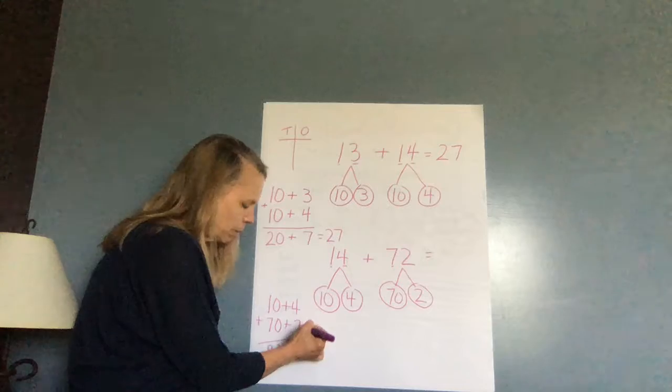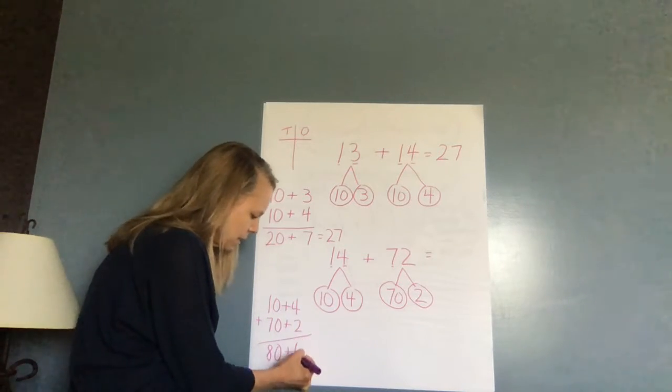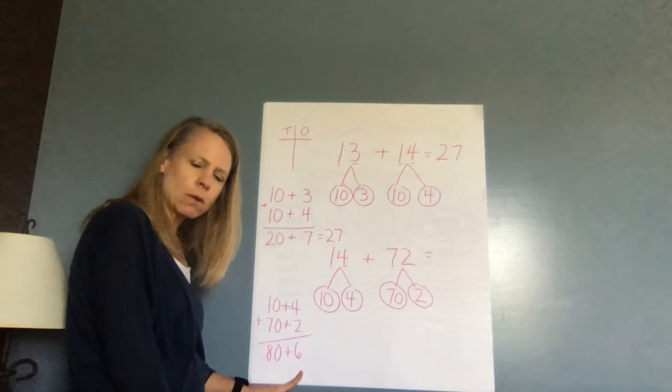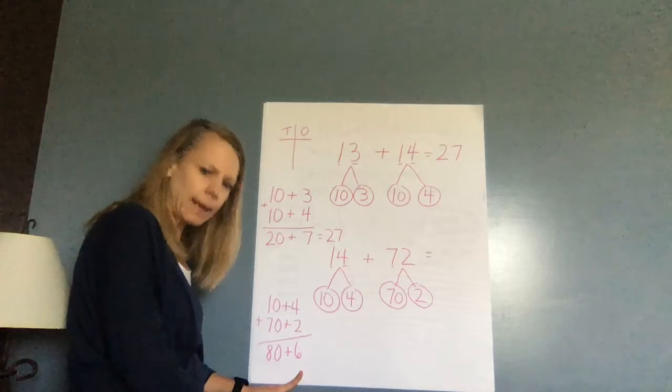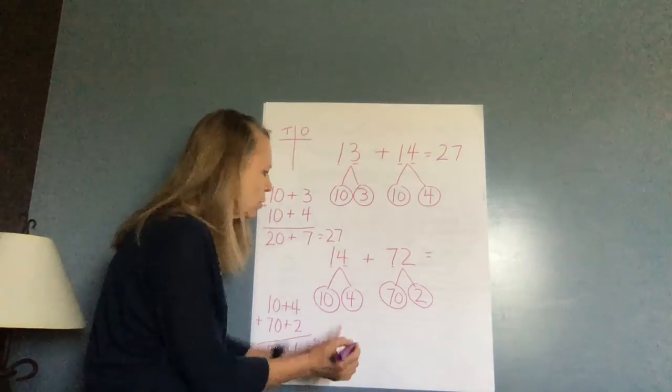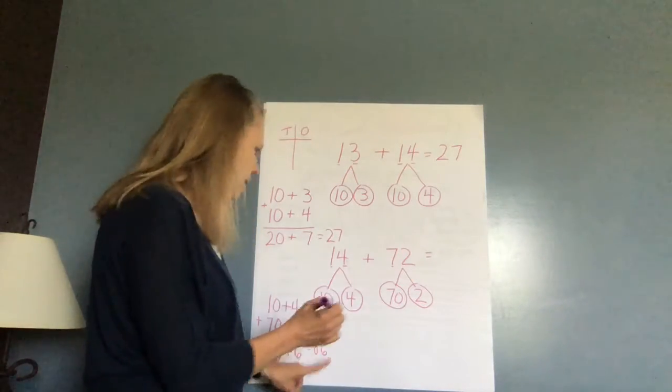Plus four plus two. Four, five, six. So now if I have 80 plus six, what do I have? 86. So I know 14 plus 72 equals 86.